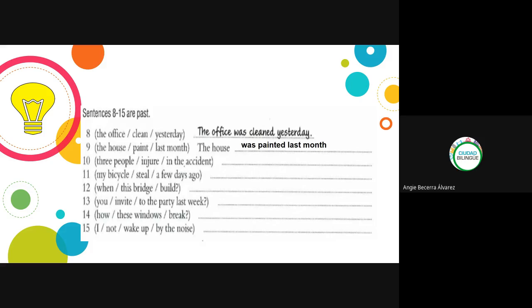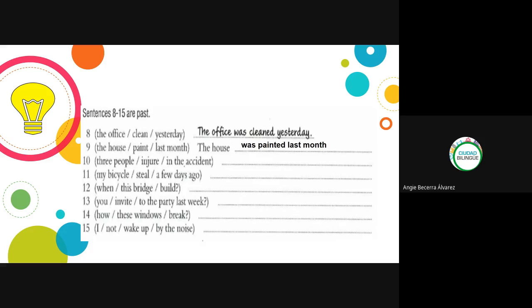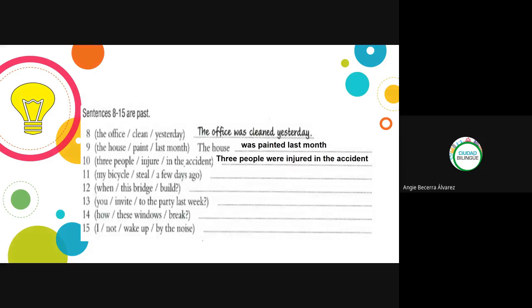Number ten: 'Three people injured in the accident.' Do you know what 'injured' means? It means lastimado, herido — when you get hurt in an accident. The verb is regular (ends in -d). 'People' is plural and there are three, so: 'Three people were injured in the accident.' Perfect.